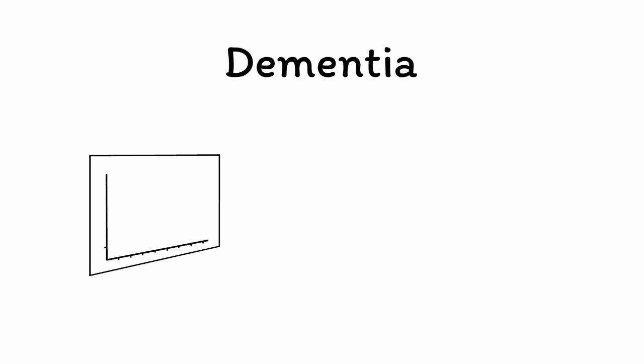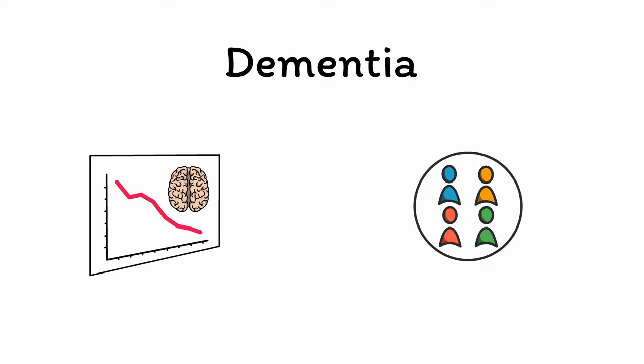Dementia is a disorder characterized by a progressive loss of memory and other cognitive abilities. Like the word cancer, dementia does not refer to a single disease, but rather to many diseases that all share commonalities. In the DSM-5, these diseases are formally called major neurocognitive disorders.